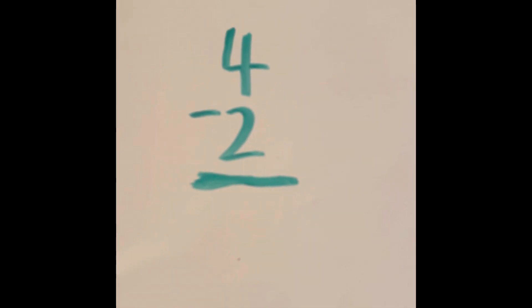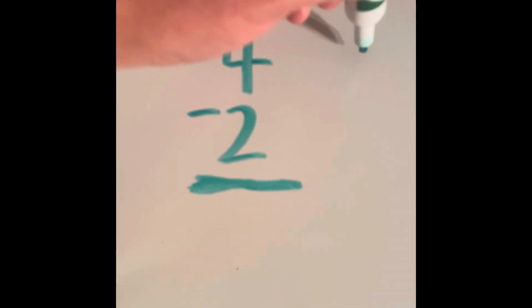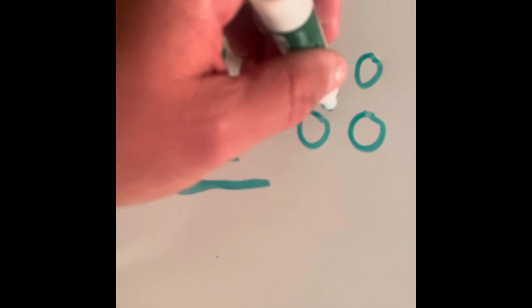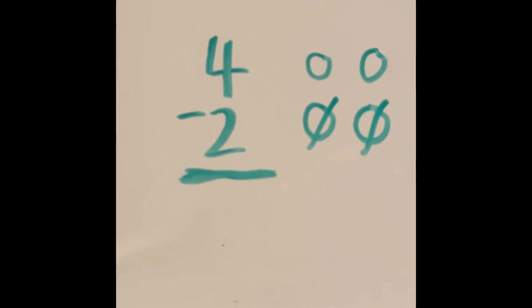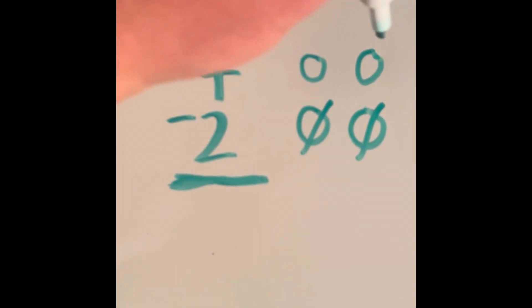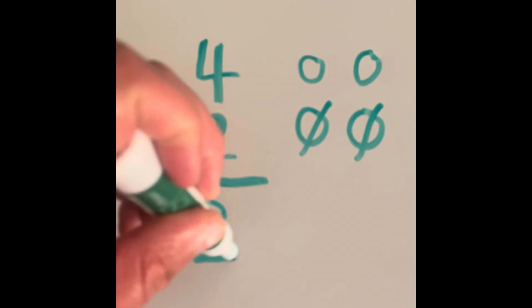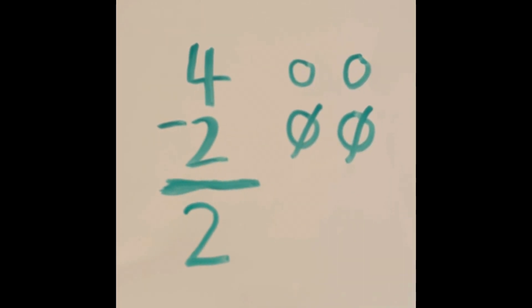Example number one: four minus two. If you're not at the point where you can subtract these numbers in your head, what you can do is draw four circles and then cross two of them out. I'm going to draw four total circles — one, two, three, four — then cross two out. Counting the circles not crossed out: one, two. So our answer is two. Four minus two equals two.